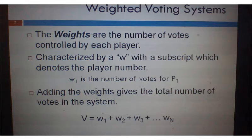Adding the weights gives the total number of votes in the system. So all this together is the total number of votes, and we'll just call that uppercase V.